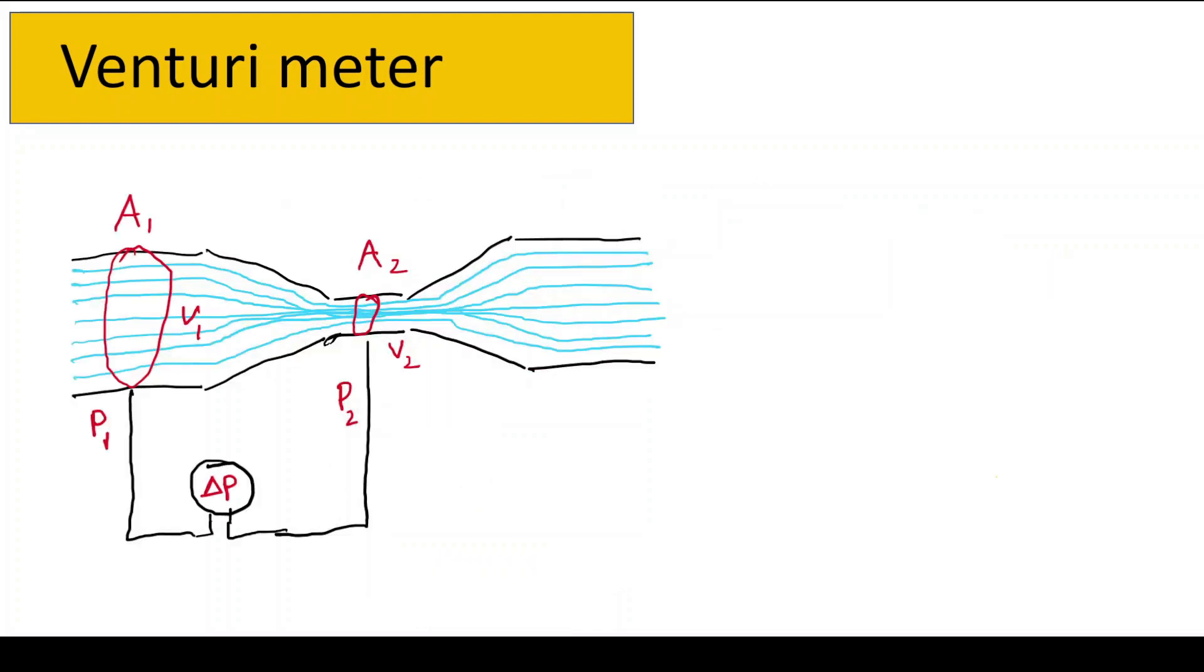Well, when the fluid flows through the venturimeter, it encounters the narrowing section, that is the throat area. According to Bernoulli's principle, as the fluid's velocity increases in the constricted section, its pressure decreases. So this pressure drop across the venturimeter allows us to measure the flow rate. The pressure difference is typically measured using pressure taps or ports located before the venturimeter.